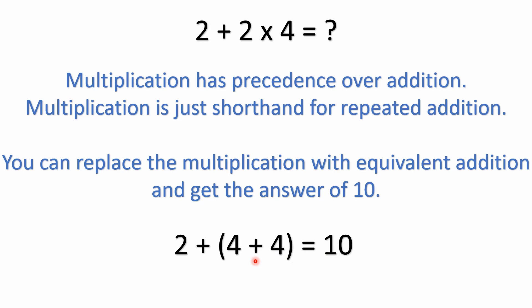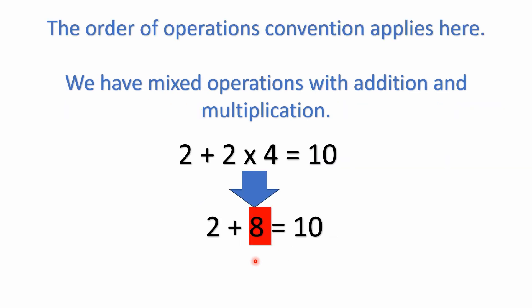Yeah, that's the correct answer. So the order of operations convention also applies here. Whenever you've got mixed operations—addition and multiplication, or division and subtraction and multiplication, any combination of those—you're going to need to remember the order of operations. With that, your multiplication always has precedence. So you need to do the 2 times 4 first. 2 times 4 is 8, and then 2+8 is 10.